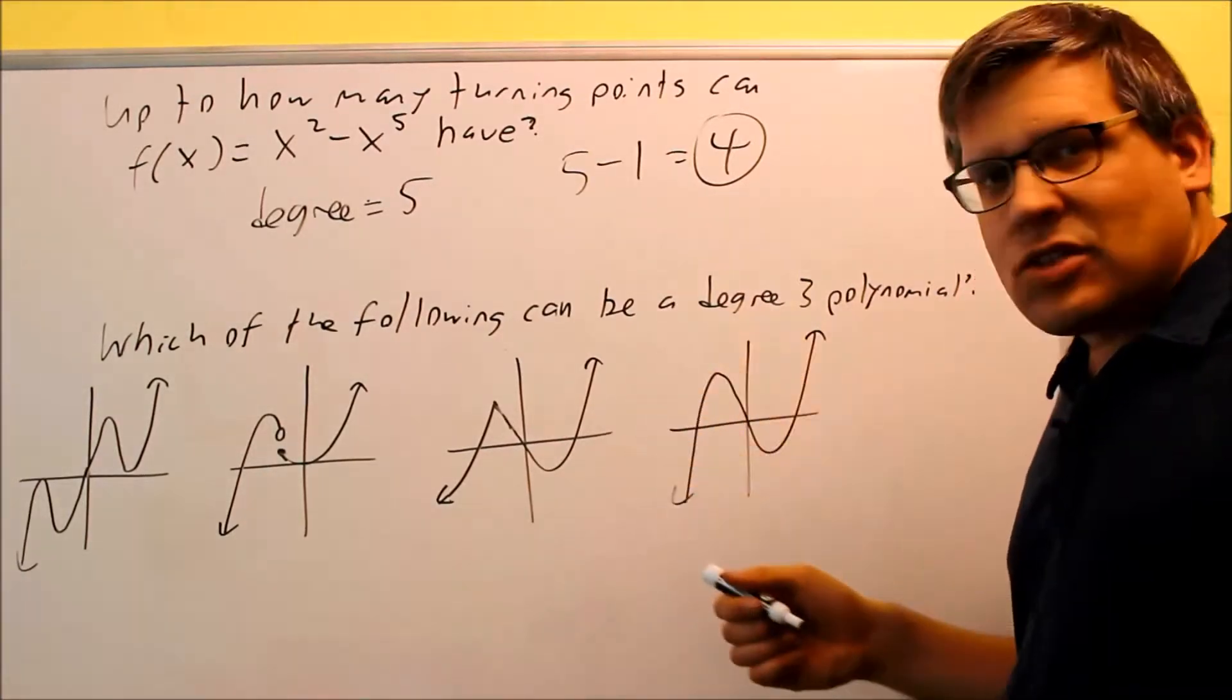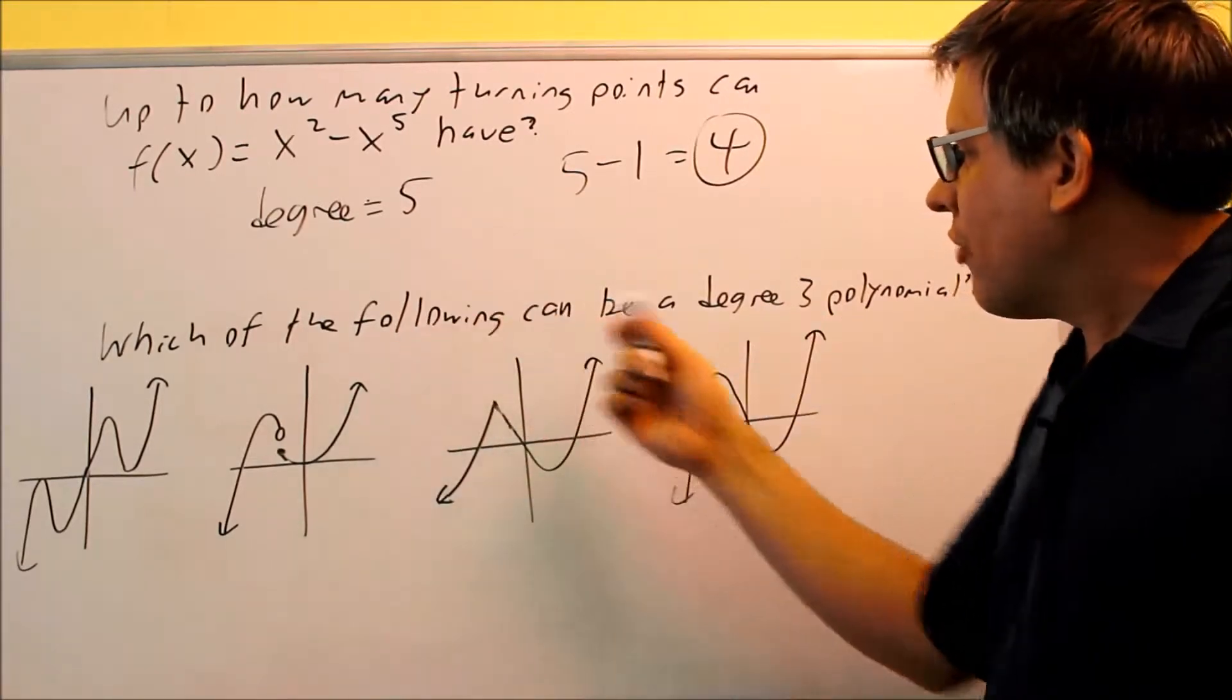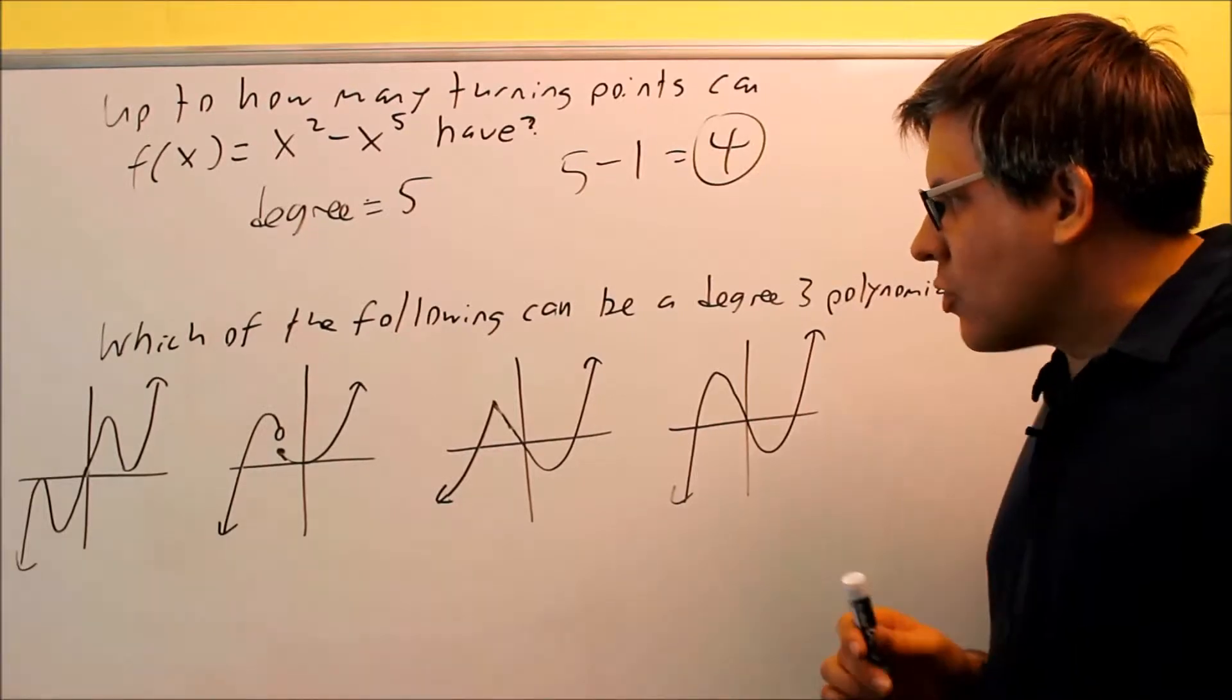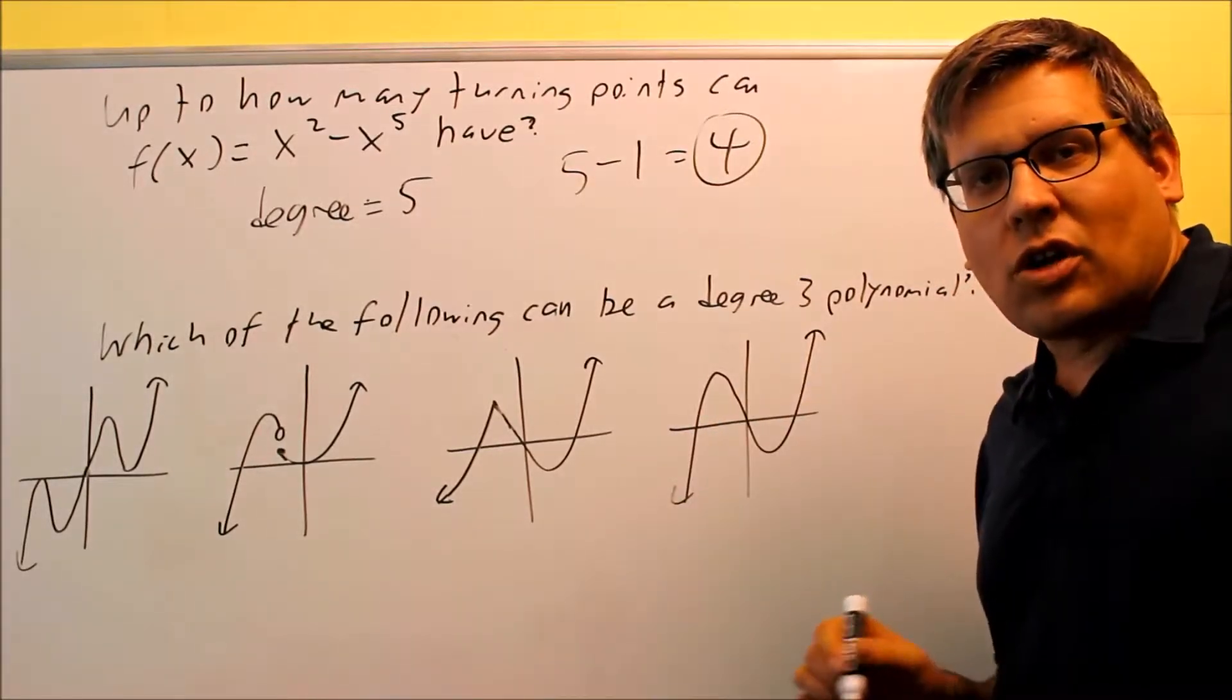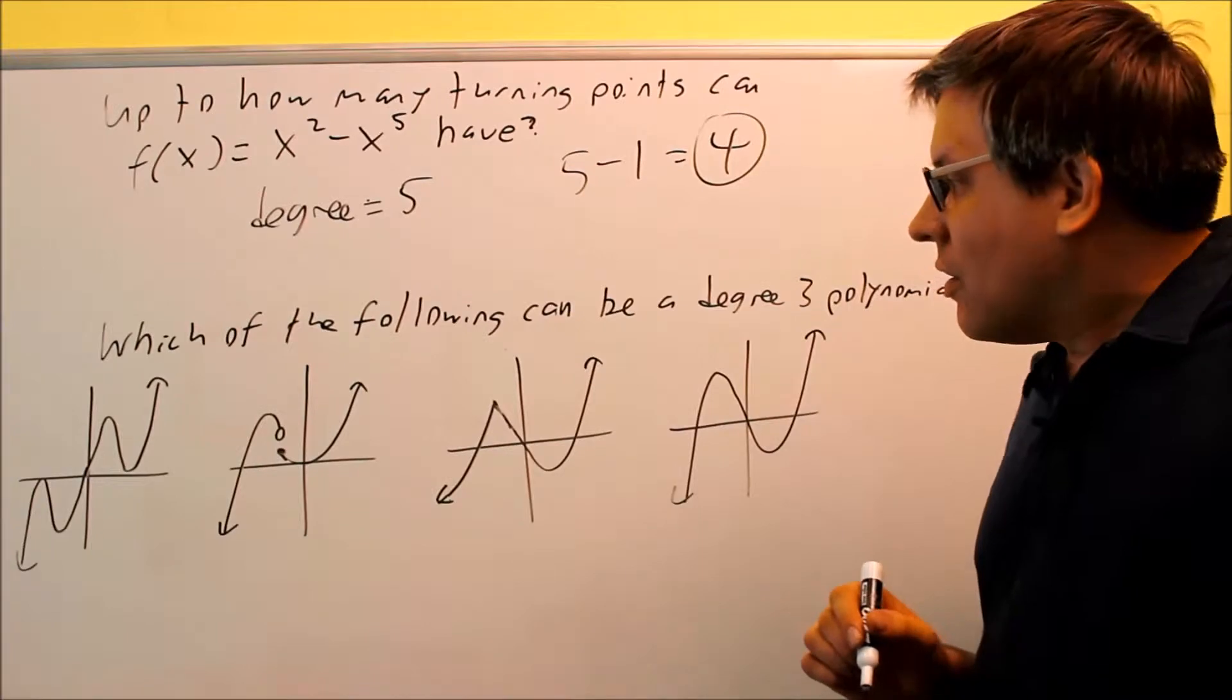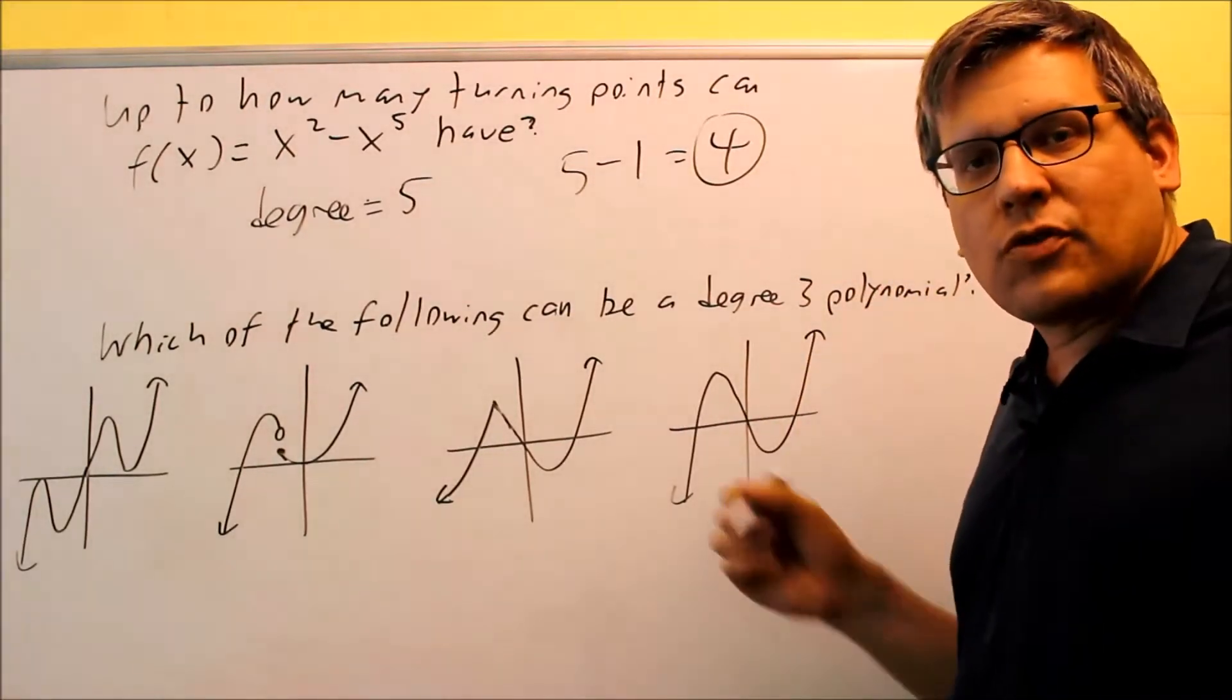Now going along that same idea with turning points, we have this one, which of the following can be a degree 3 polynomial. Okay, so first of all, for polynomials, polynomials have to be continuous. There can't be any breaks in it, and there also can't be any creases or corners on our graph either.